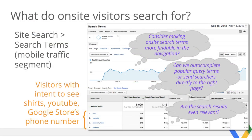To answer this question, Analytics has a Site Search Search Terms feature. Visitors to the Google Store show intent to see shirts, YouTube merchandise, and also the Google Store's phone number. Let's make a note of these top queries. Given that site search shows thousands of attempts in the last few months, questions we start asking are: should we consider making on-site search terms more findable in the navigation? Can we auto-complete popular query terms or send searchers directly to the right page? Are the search results even relevant?